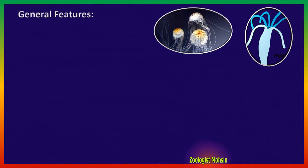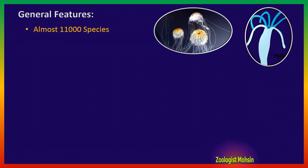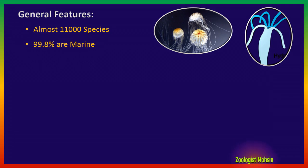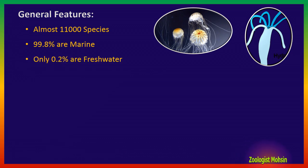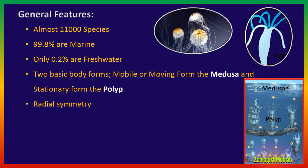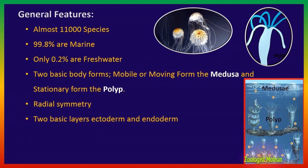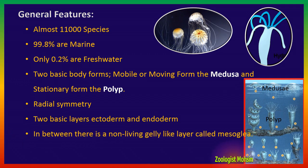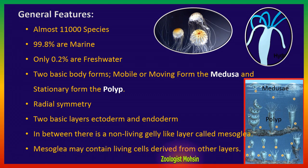Now let's look at the general features. There are almost 11,000 species. Out of 11,000, 99.8% are marine while only 0.2% are freshwater, including hydra. There are two basic body forms in Coelenterata: the mobile or moving form — the Medusa — and the stationary form — the Polyp. Due to these two forms they show polymorphism. They are radially symmetrical and have two basic layers only, with a non-living jelly-like layer called mesoglia. Mesoglia may contain living cells derived from other layers, but itself it is non-living.